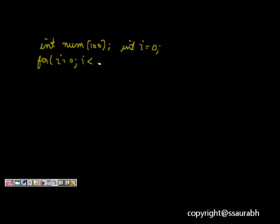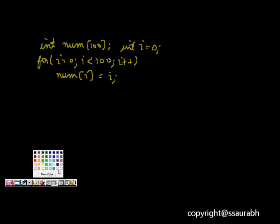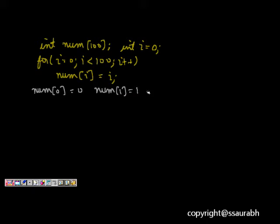and then we say that num of i is equal to i. This means now what happens is that we have num[0] will be 0, num of 1 will be 1, num 2 will be 2, and this will go